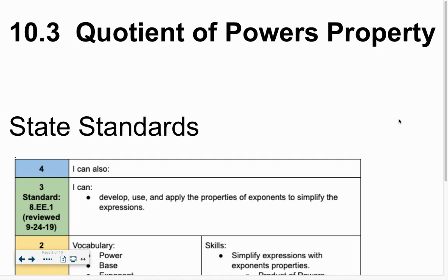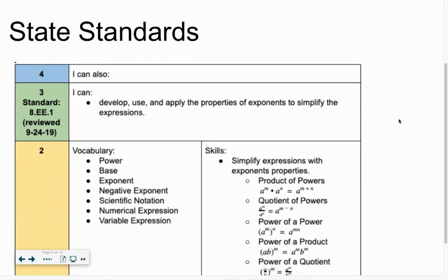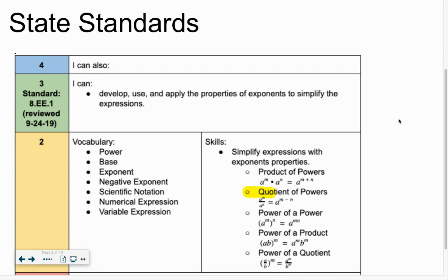10-3, quotient of powers property. Standard 8EE1, you can see underneath the skills. This is one of our skills for this standard, the quotient of powers.